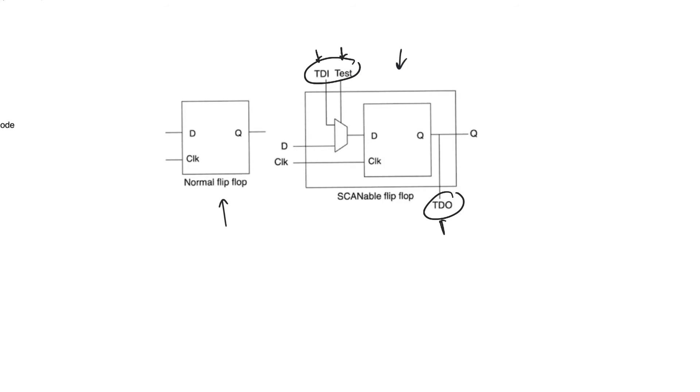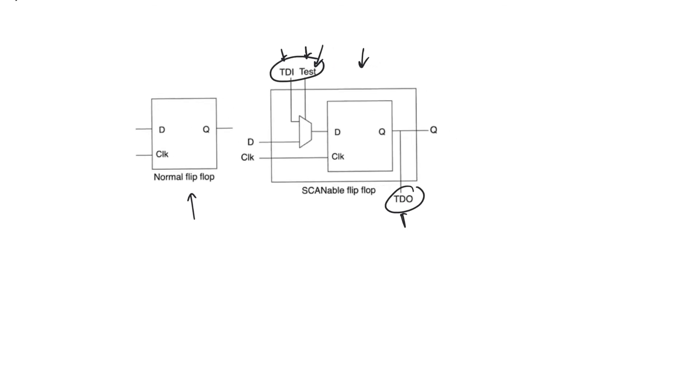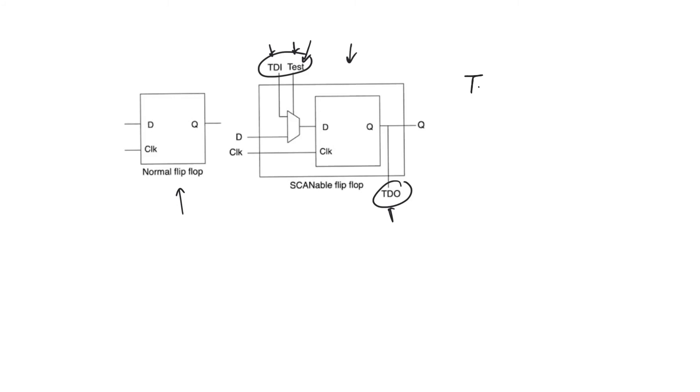So TDI stands for Test Data In, TDO stands for Test Data Out, and Test is just a control pin that indicates whether or not we are in test mode. And so this scannable flip-flop has two modes, normal mode and test mode. This depends on the state of the test signal. If the test input signal is equal to zero, then we are in normal mode. If the test control input is equal to one, then we are in test mode.